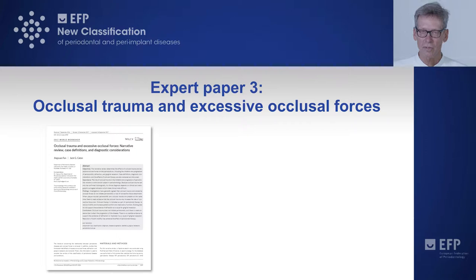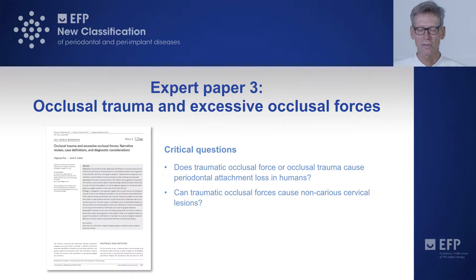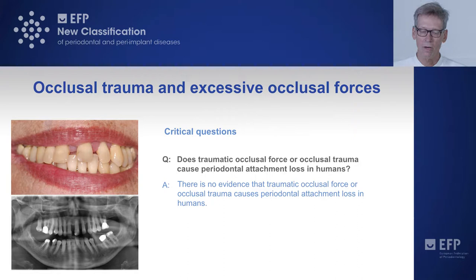The critical questions we phrased were these: Does traumatic occlusive force — occlusive trauma — cause periodontal attachment loss in humans? There is no evidence that traumatic occlusive force or occlusive trauma causes periodontal attachment loss in humans. This is in contrast to some experimental animal findings, but this is the most relevant outcome, which is why we emphasized that these were findings in humans.